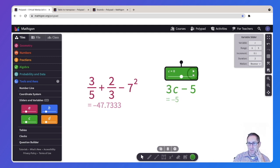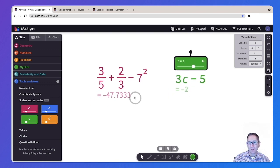I can hit play and the value of that changes as the value of C changes. I could pause anywhere along the way and continue to explore what happens to that expression as the value of C changes.